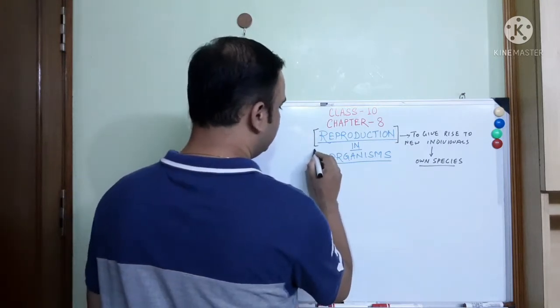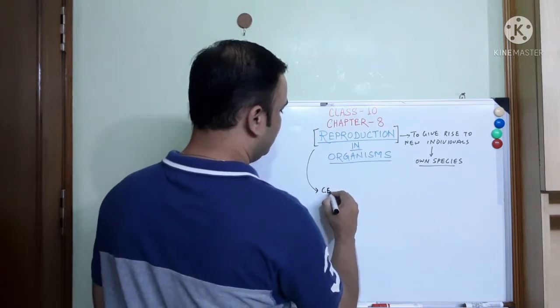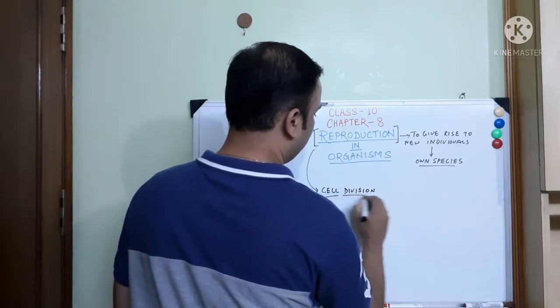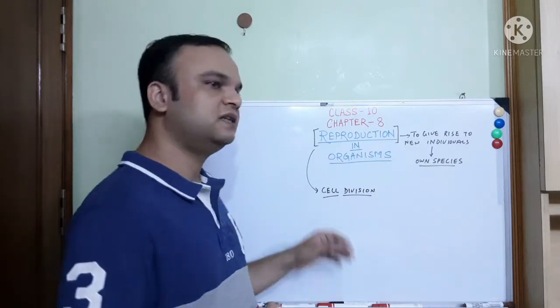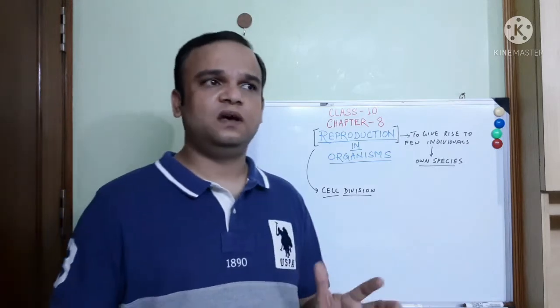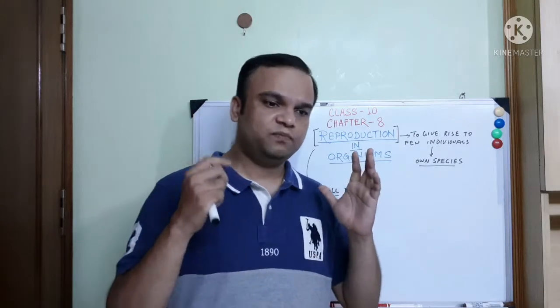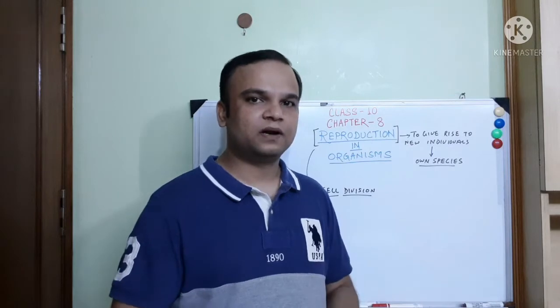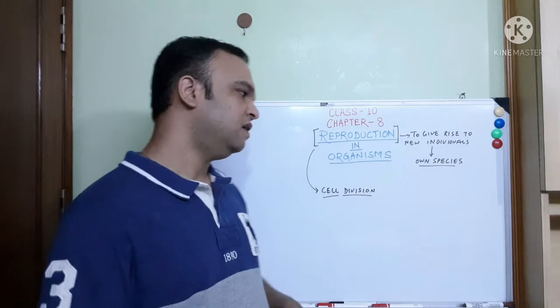The first thing we always understand in any physiological process is what is the meaning. Reproduction is a physiological process shown by all organisms. It means to give rise to new individuals of their own species. Reproduction in actual sense is understood by cell division, because whenever any organism reproduces, the cells are divided. Cell division is actually the basis of reproduction.